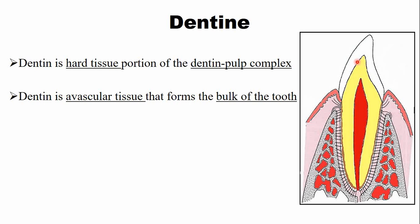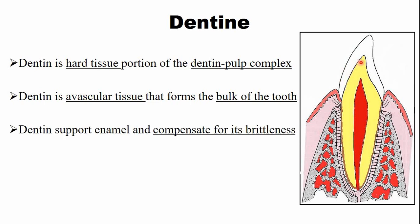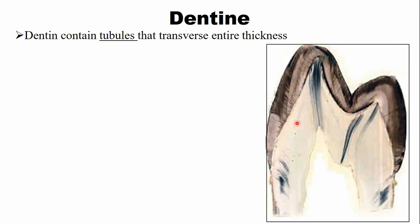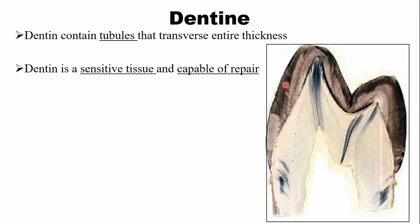In the crown portion, dentine supports the enamel because enamel is brittle; dentine compensates for this brittleness and prevents enamel from fracture. Dentine has tubules that traverse the entire thickness of the dentine — visible here in this ground section of a premolar tooth. Because of these tubules, dentine is a sensitive tissue. In the living tooth, odontoblasts line the outer surface of the dental pulp and their cell processes extend into these tubules.